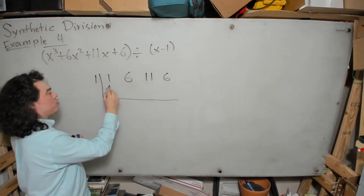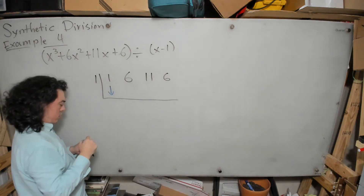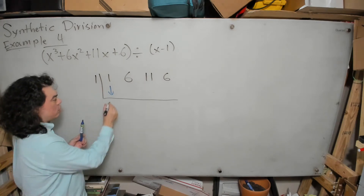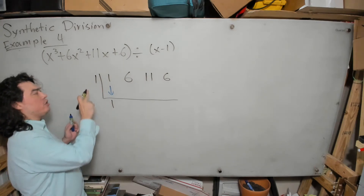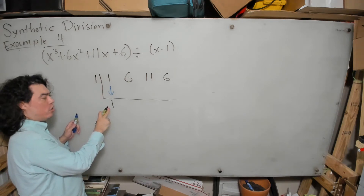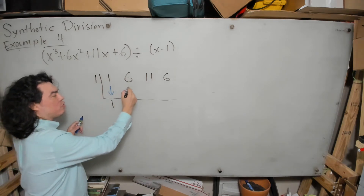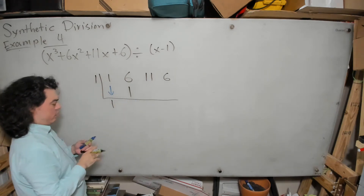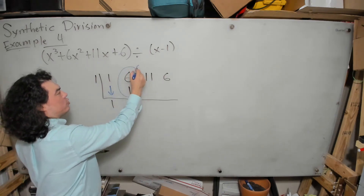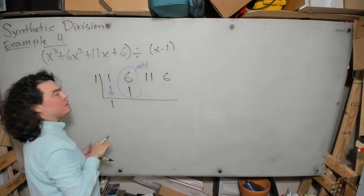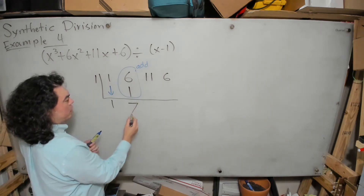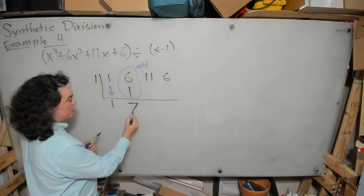We're going to first drop down the 1, and that gives us a 1 here. We now ask: what is 1 times 1? That's 1. We place the result of that multiplication here, and then we add these two numbers. What is 6 plus 1? That's 7. We place that result here.